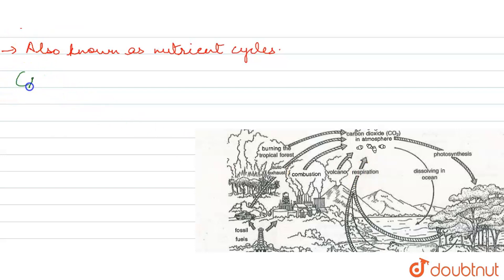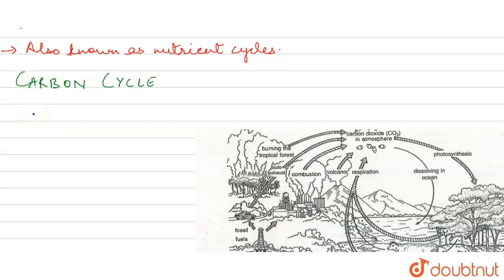What is the carbon cycle? Carbon is a very important constituent of organic compounds found in living beings in the form of carbohydrates, fats, proteins, and nucleic acids. Carbon is found in all living organisms, and it is linked to the energy flow.